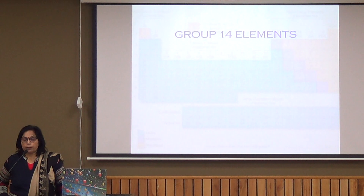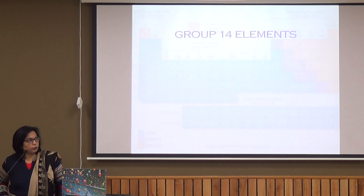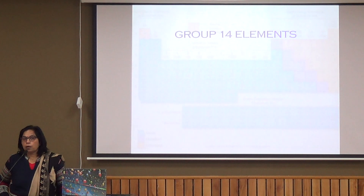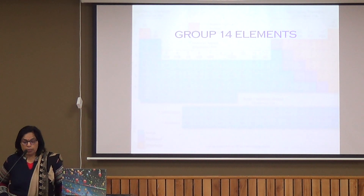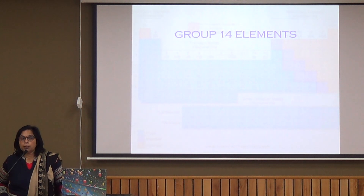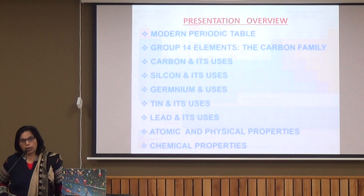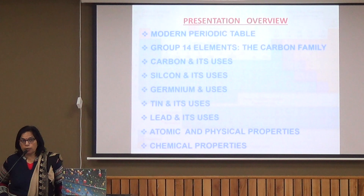Now we start group 14 elements. Group 14 is called the carbon family. It consists of carbon, silicon, germanium, tin and lead. These are typical non-metals because of their small size, but metallic character increases down the group. Carbon and silicon are non-metals, germanium and tin are metalloids, and lead is a metal.